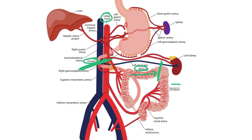Finally, let's look at the hindgut — everything that is below this line and above this line. The inferior mesenteric artery supplies the hindgut structures, the superior mesenteric artery supplies the midgut structures, and the celiac trunk supplies all the foregut structures.